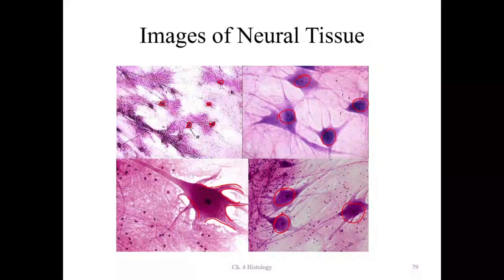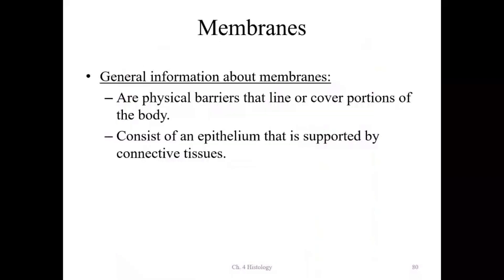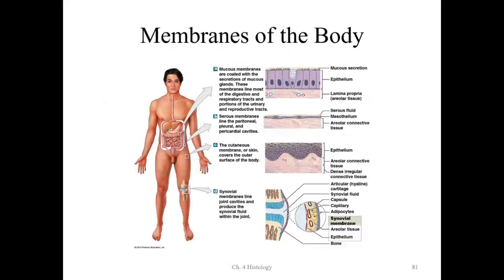That concludes our tissues. Next we'll discuss membranes. Histologically, membranes are barriers in the body that can line or cover structures. They consist of epithelium along with supporting connective tissue, such as areolar connective tissue. The main membrane types are mucous, serous, cutaneous, and synovial membranes.